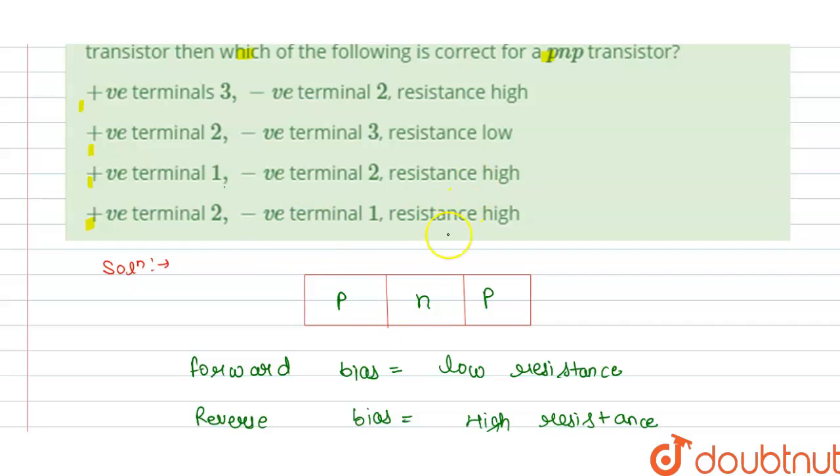So from this we can say that this option is not correct and this is correct. As we know that if this terminal is positive and this is negative, then it is the condition for reverse bias.